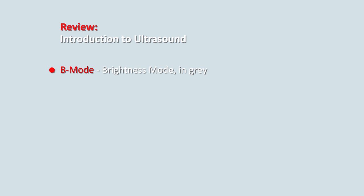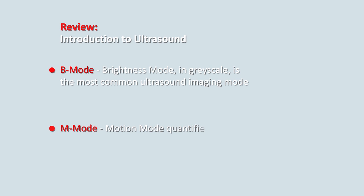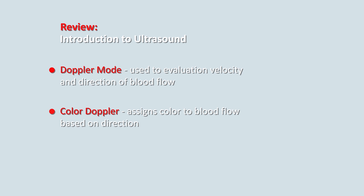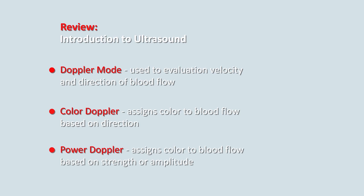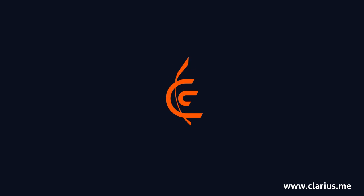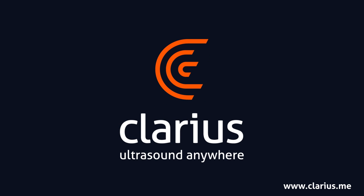Various imaging modes were discussed. B-mode or brightness mode is the most common ultrasound imaging mode. M-mode or motion mode quantifies motion over time. Doppler mode is used to evaluate velocity of blood flow. Color Doppler assigns color to blood flow based on the flow direction toward or away from the transducer. Power Doppler assigns a color to blood flow based on the strength or amplitude of the returning signal. Now that you understand the basics of ultrasound, you are ready to proceed to targeted anatomy tutorials for your specialty.